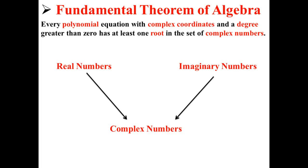Every polynomial equation with complex coordinates and a degree greater than zero has at least one root in the set of complex numbers. This is according to the fundamental theorem of algebra. Complex numbers are made up of all real numbers and imaginary numbers.